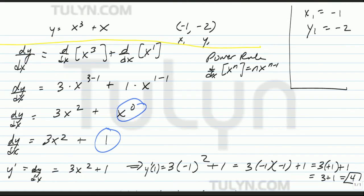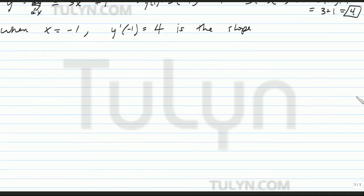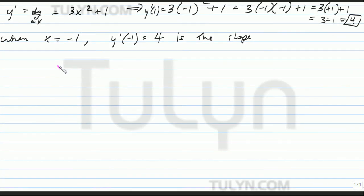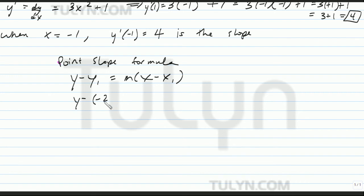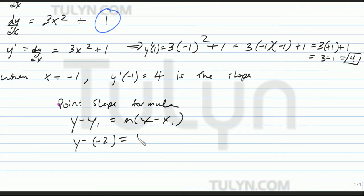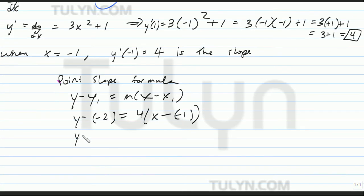Go ahead and go back to your little box — m equals 4 — and plug the values into the point-slope formula. Point-slope formula is y minus y1 equals m times x minus x1. So y minus negative 2 equals 4 times x minus negative 1. That gives us y plus 2 equals 4 times x plus 1.